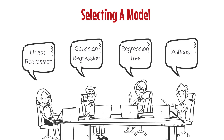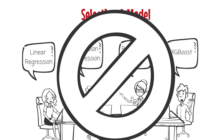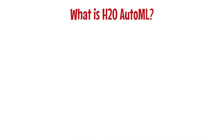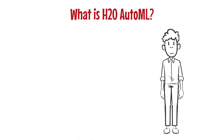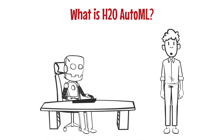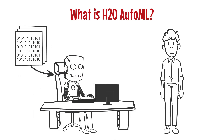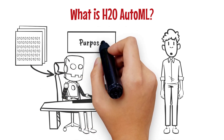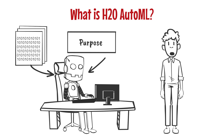Now, by using the H2O AutoMachine Learning Library, we are able to avoid such a situation. So, what is H2O AutoMachine Learning Library? I personally treat it as a robot, because after we feed it the dataset and tell it what information we want to get, it will try all possible models and give you the model with the best performance.